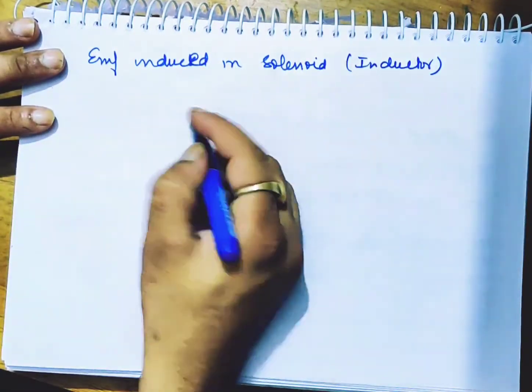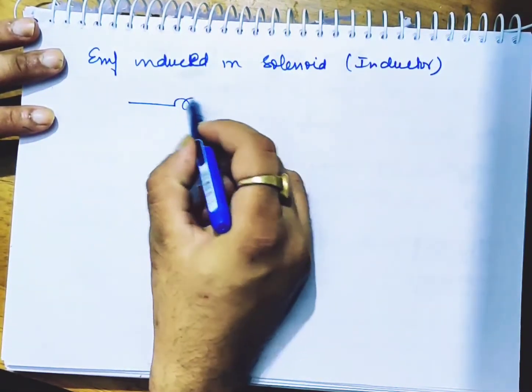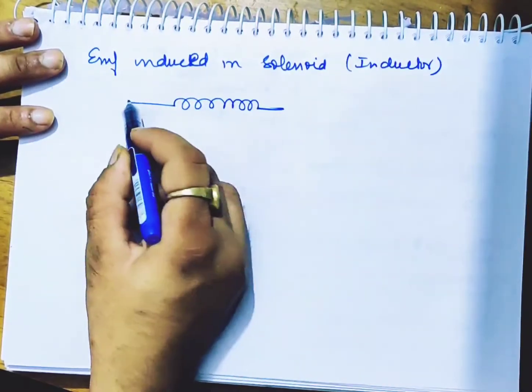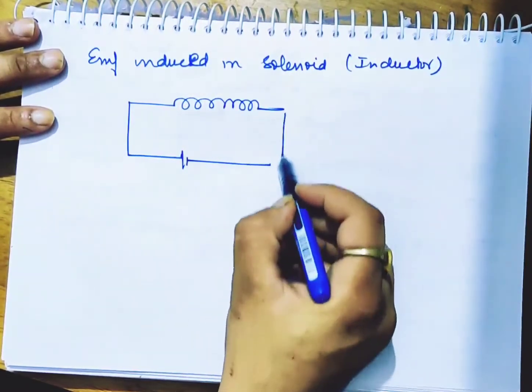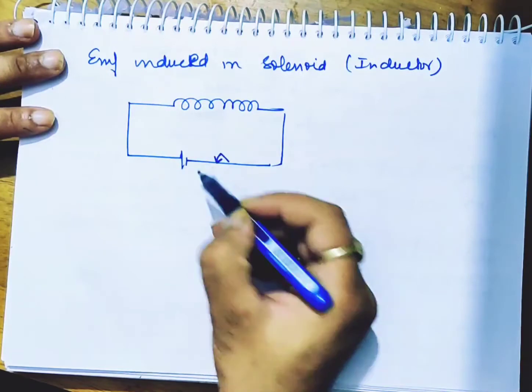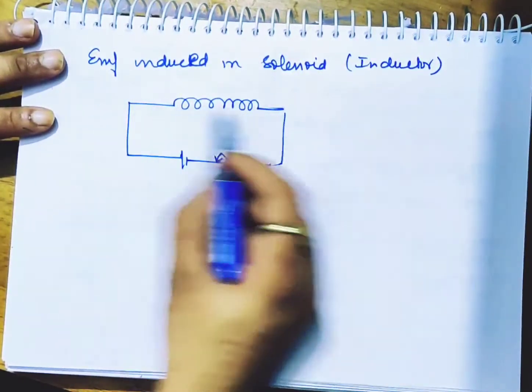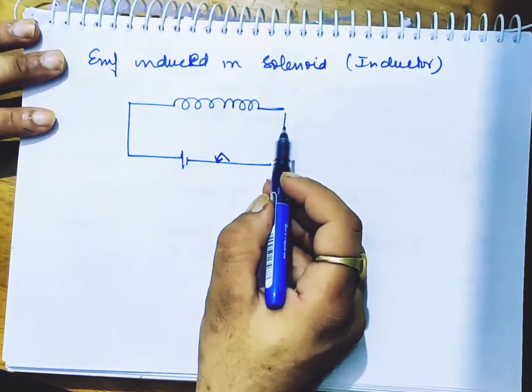as you can see, the current in the circuit, the current in the inductor, the magnetic field will increase and the flux will increase.